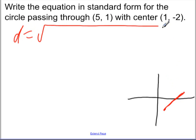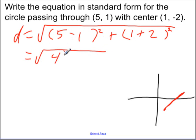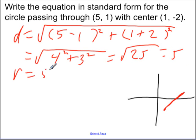And so the distance formula is the square root of the difference between the x values, which is (5 - 1), and the difference between the y values, which is (1 - (-2)), which is (1 + 2). And if we simplify that, we get 4 squared plus 3 squared, which is the square root of (16 + 9), which is 25. And so that's 5. So the distance between those two points is 5, which means that our radius is 5.